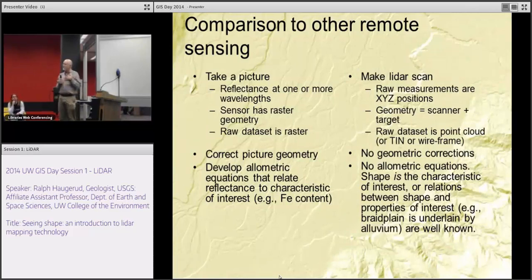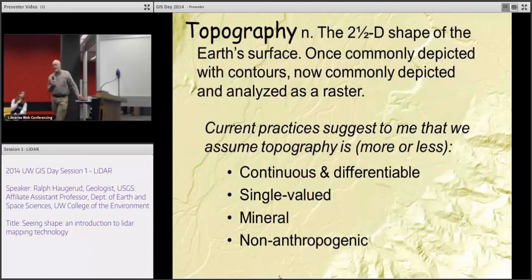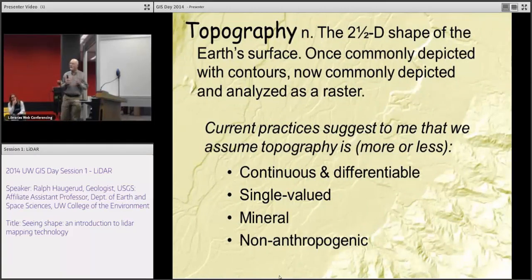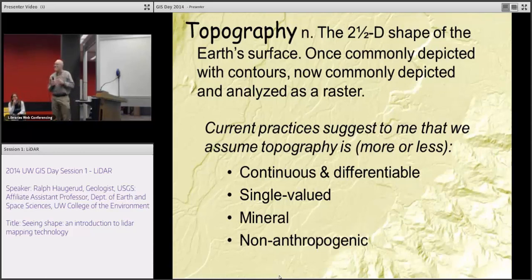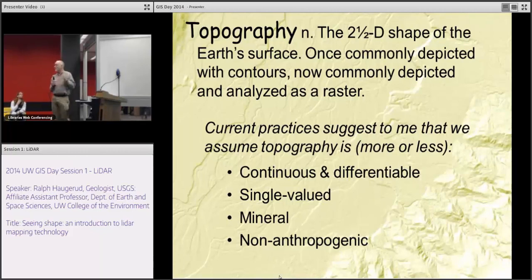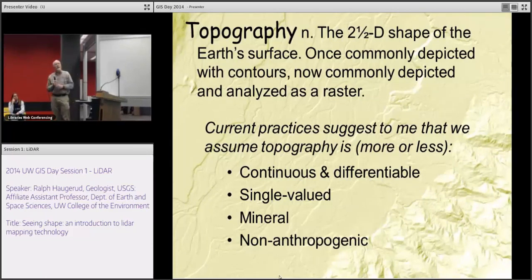These data are so rich and so detailed and so wonderful that they lead you to question what topography is and how you think about it. I sat down and wrote a definition of topography a while ago, and this is what I came up with: topography is the 2.5D shape of the Earth's surface. It's not flat, not 2D — it's got wrinkles to it. We used to depict it with contours; now typically we depict and analyze it with a raster.